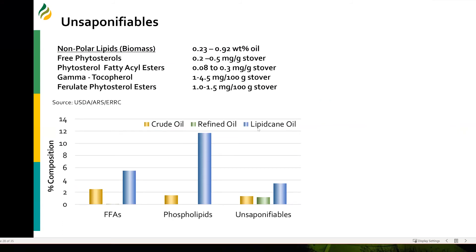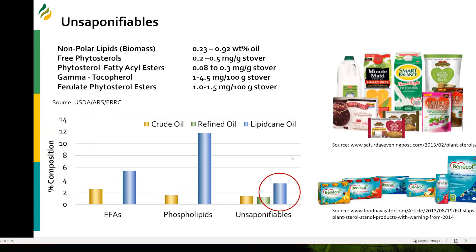There are also unsaponifiables present in lipid cane. Unsaponifiables recovered from conventional stover are shown here, but from lipid cane the amount of unsaponifiables is almost twice what you would get from crude corn oil. This itself represents about a $2.5 billion industry, where phytosterols and ferulate phytosterol esters are added to food products — these unsaponifiables have been shown to reduce serum cholesterol. Krishna is working on a biorefinery concept to produce all kinds of different products from these CABI crops.